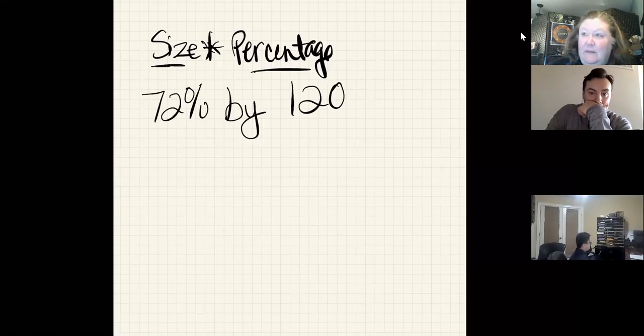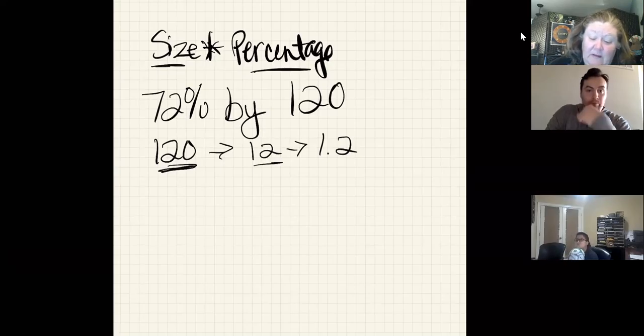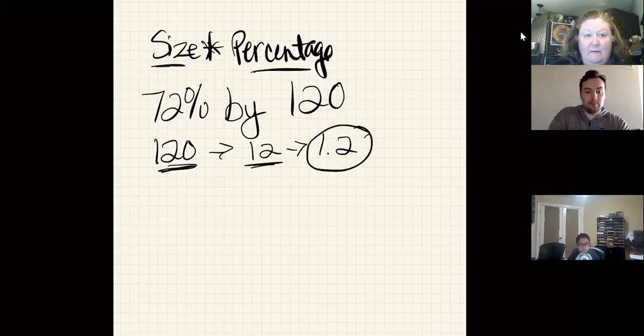I like that somebody said they took the 120 and turned it into 12, and then turned that into 1.2. What that person did is they reduced this to a number—they basically reduced it by 10, and then they took this and did it times 10 percent. Once you have that, you can start figuring things out.